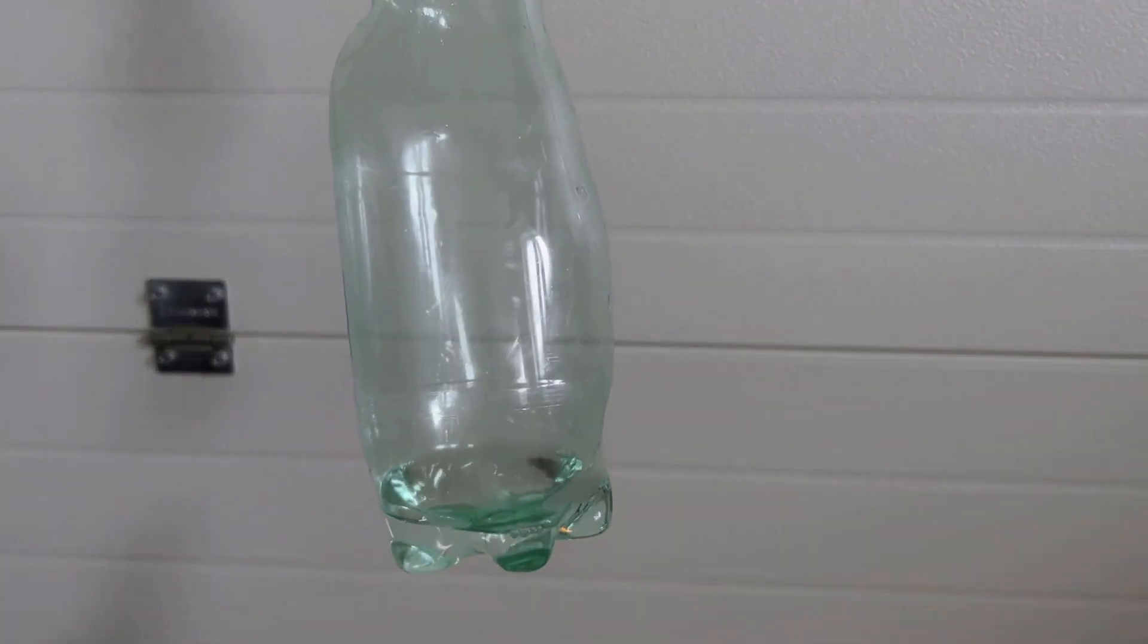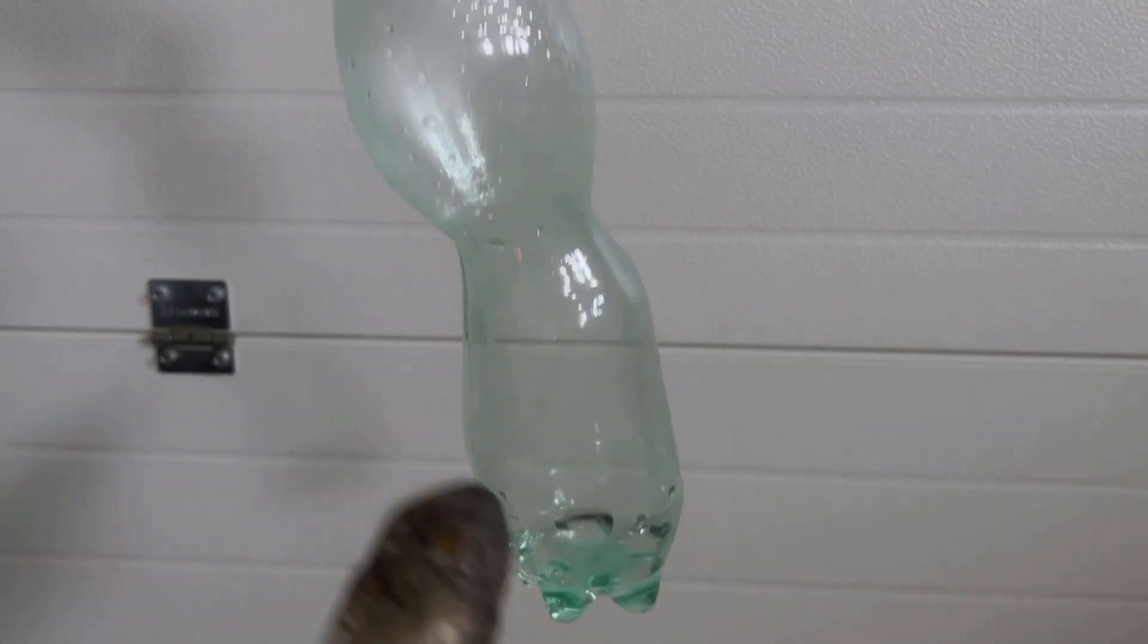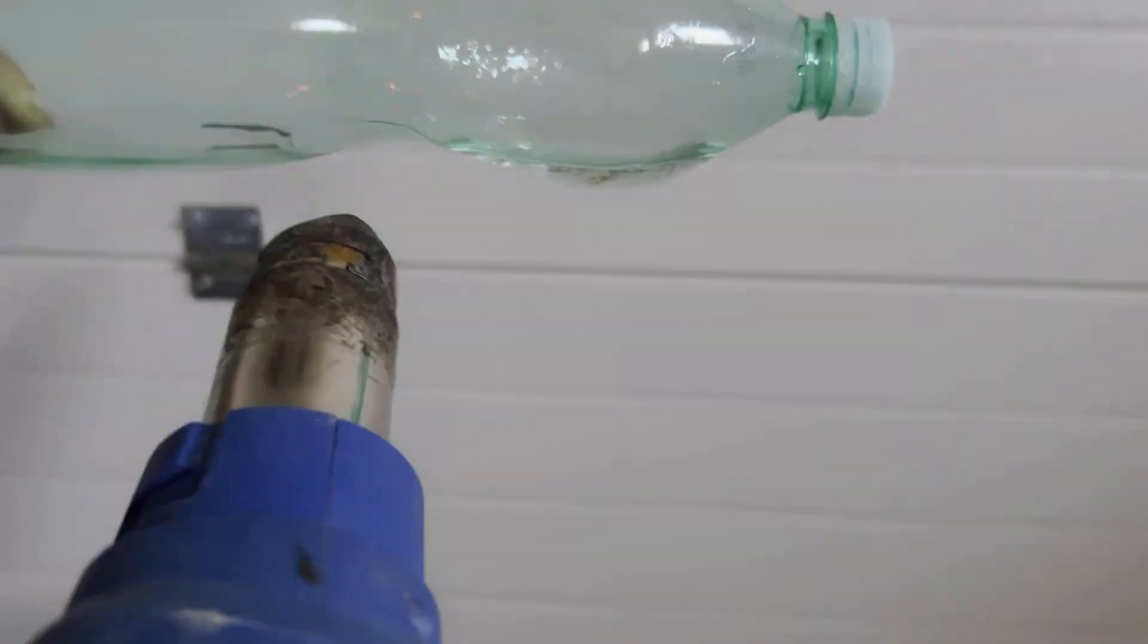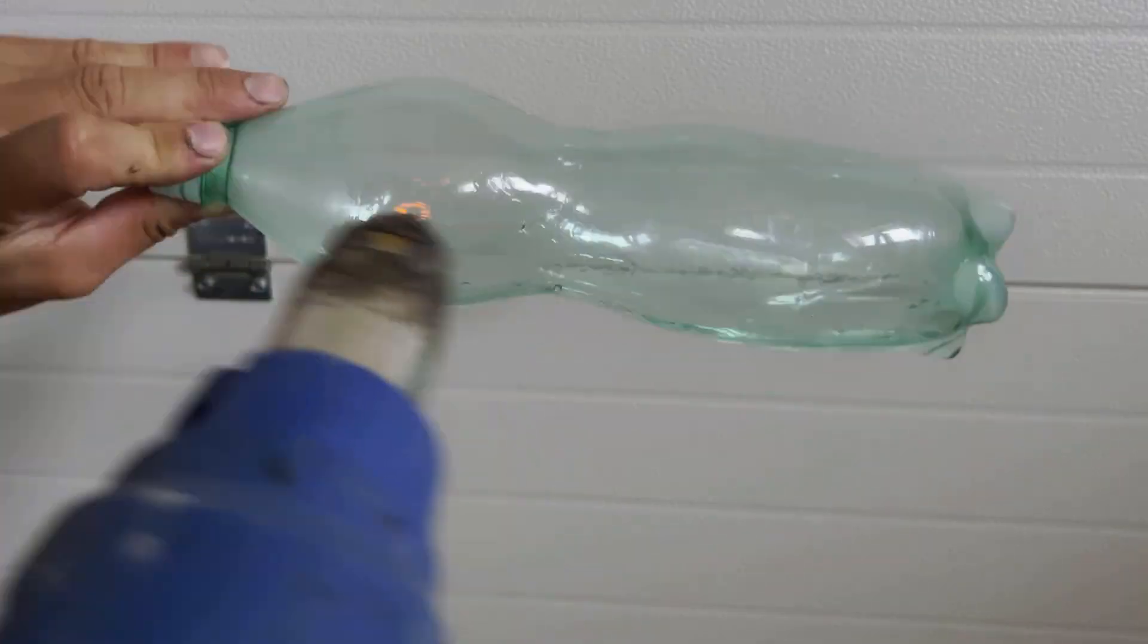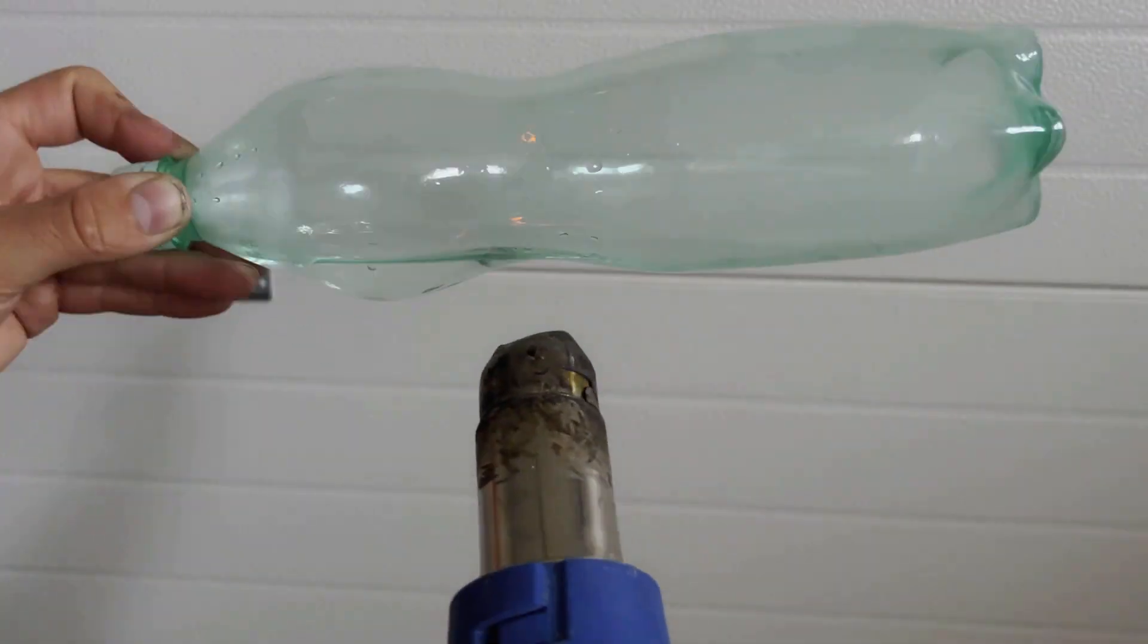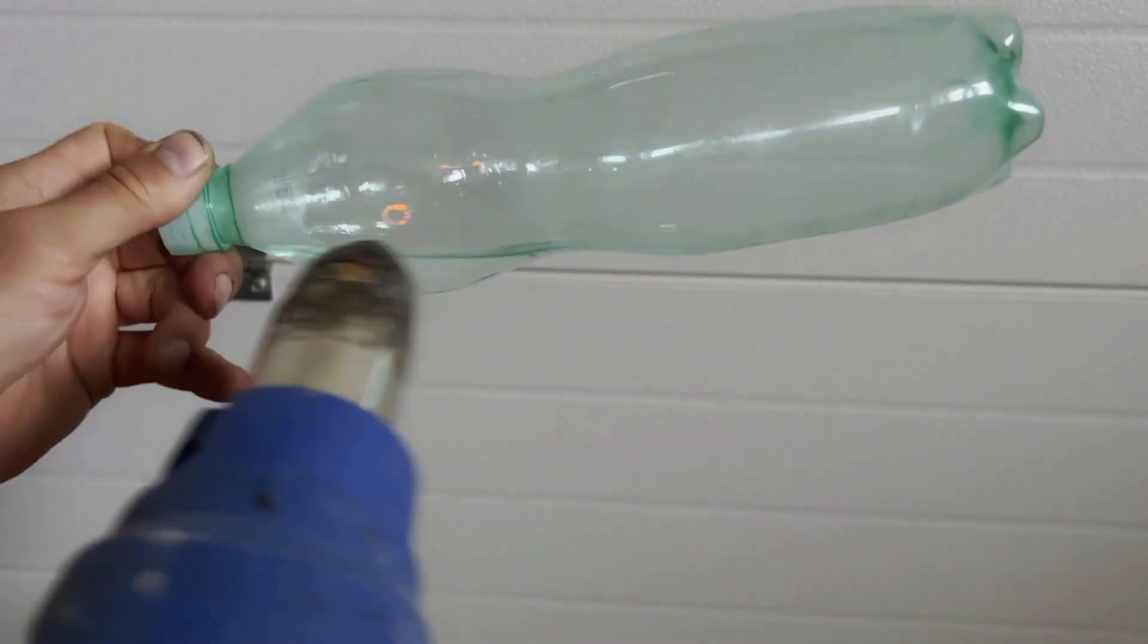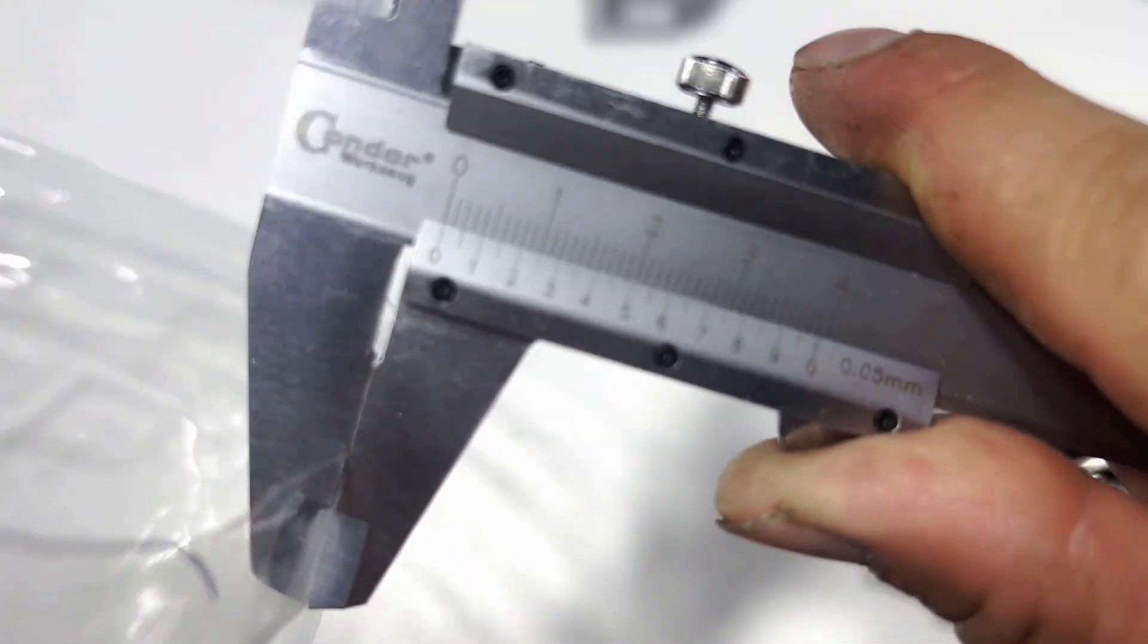This is best achieved with a compressor: inflate the bottle then heat it with a heat gun. Another option is to pour water into it and heat it. As the water evaporates, pressure builds, smoothing the bottle. However, this method is not as effective.